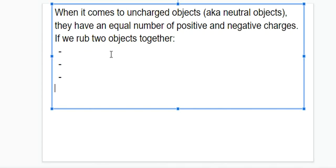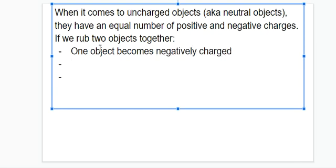When it comes to uncharged objects or neutral objects they have an equal number of positive and negative charges as I showed you above with the balloons. If we rub two objects together one object becomes negatively charged, the other object becomes positively charged,